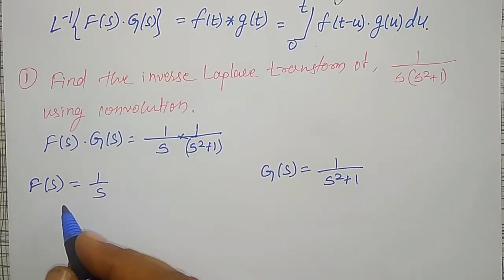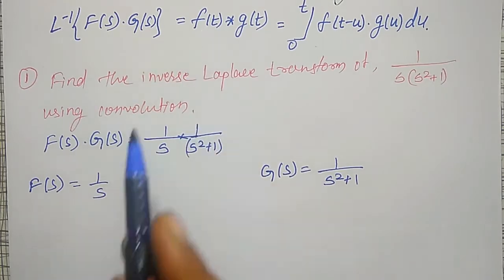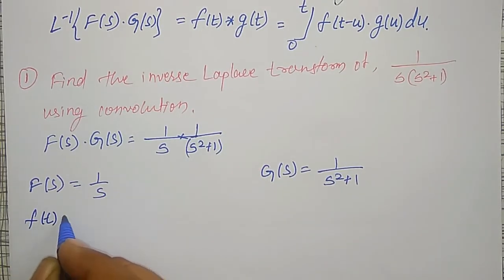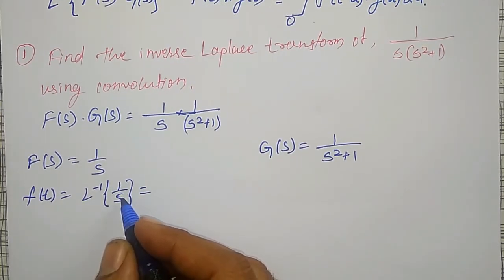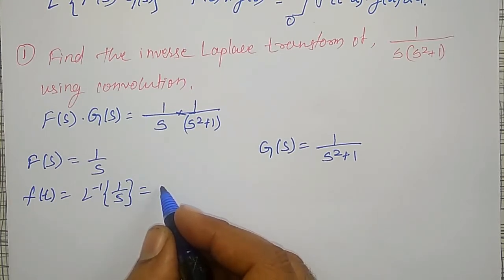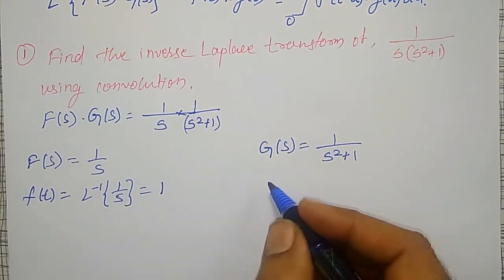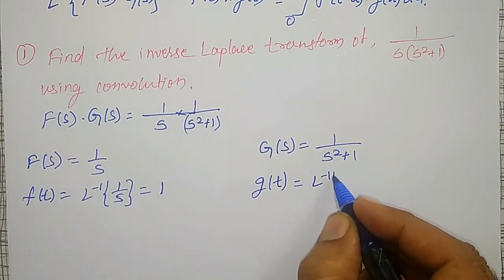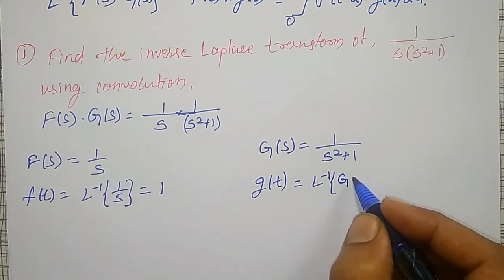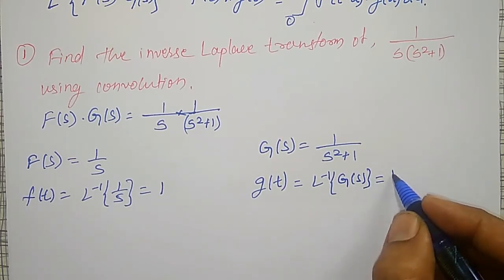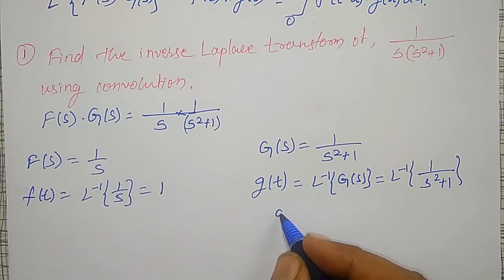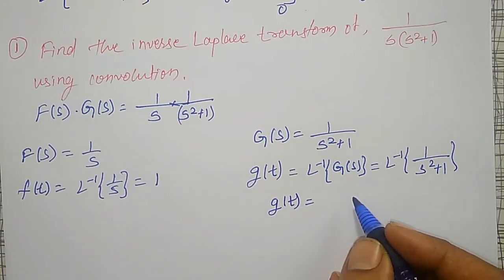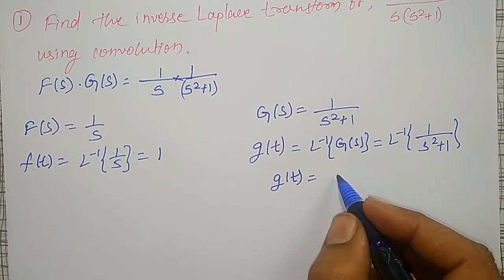Using F(s), let me find f(t). Therefore, f(t) = inverse Laplace transform of 1/s, which is simply the constant 1. Similarly, g(t) = inverse Laplace transform of G(s) = inverse Laplace transform of 1/(s² + 1), which is sin(t). We have to remember those first seven standard forms.